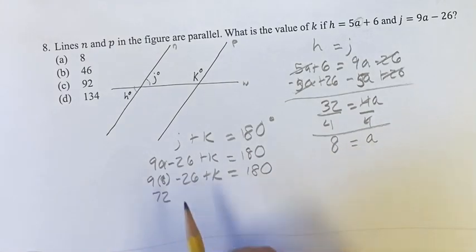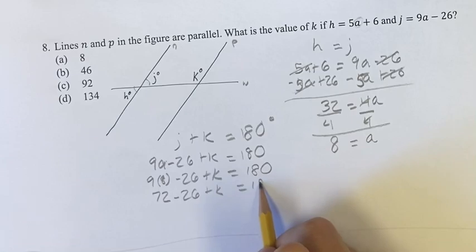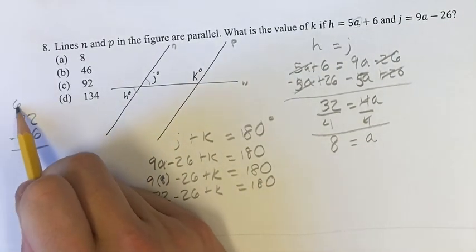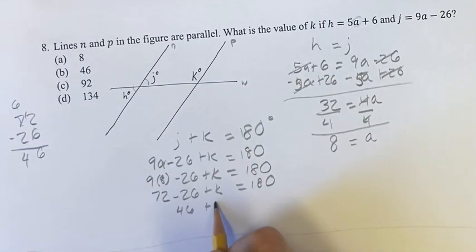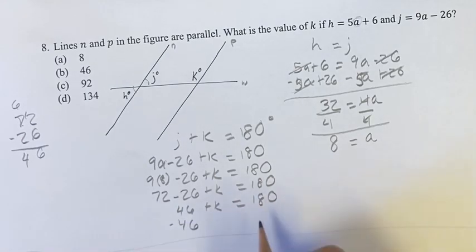9 times 8 is 72 minus 26 plus k is 180. We have 72 minus 26 is 46 plus k is 180.